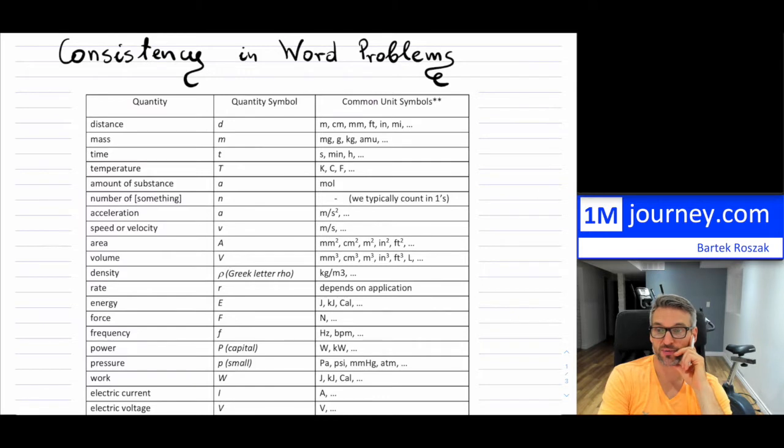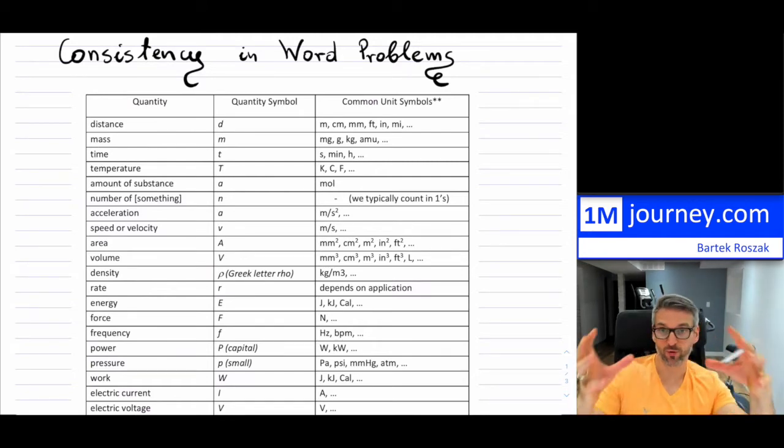Now, in terms of consistency, so what I mean, if you're looking at this particular table where you have these quantities from distance, mass, time, temperature, and so on, you know, we have our symbols. Now, we have all of these different units. And notice, the one key thing is that when you're solving for a quantity, you may not have every single measurement in that particular word problem having the exact same units that you want to be able to use.